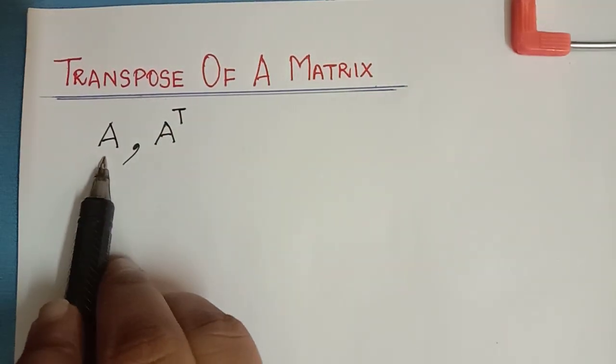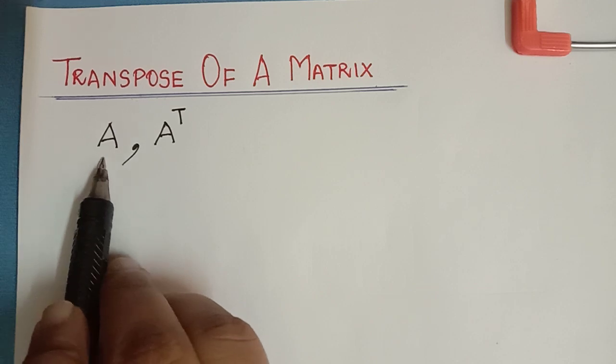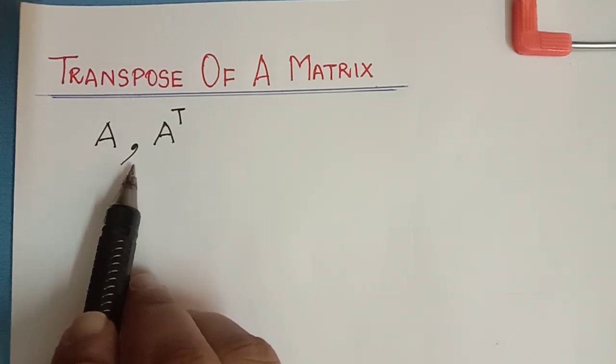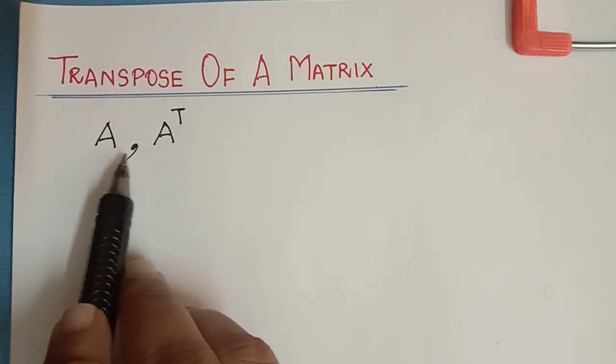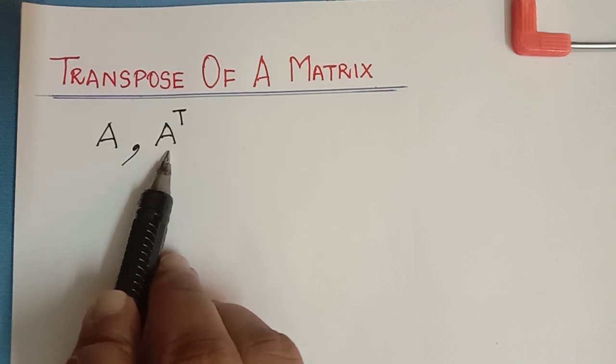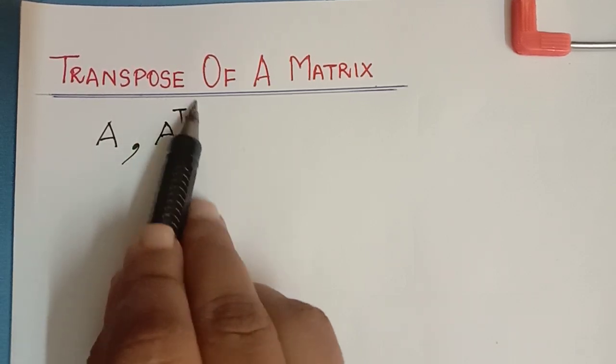So for any given matrix A, the matrix whose rows are columns of A and whose columns are rows of A is called the transpose of A, and it is denoted by A transpose.